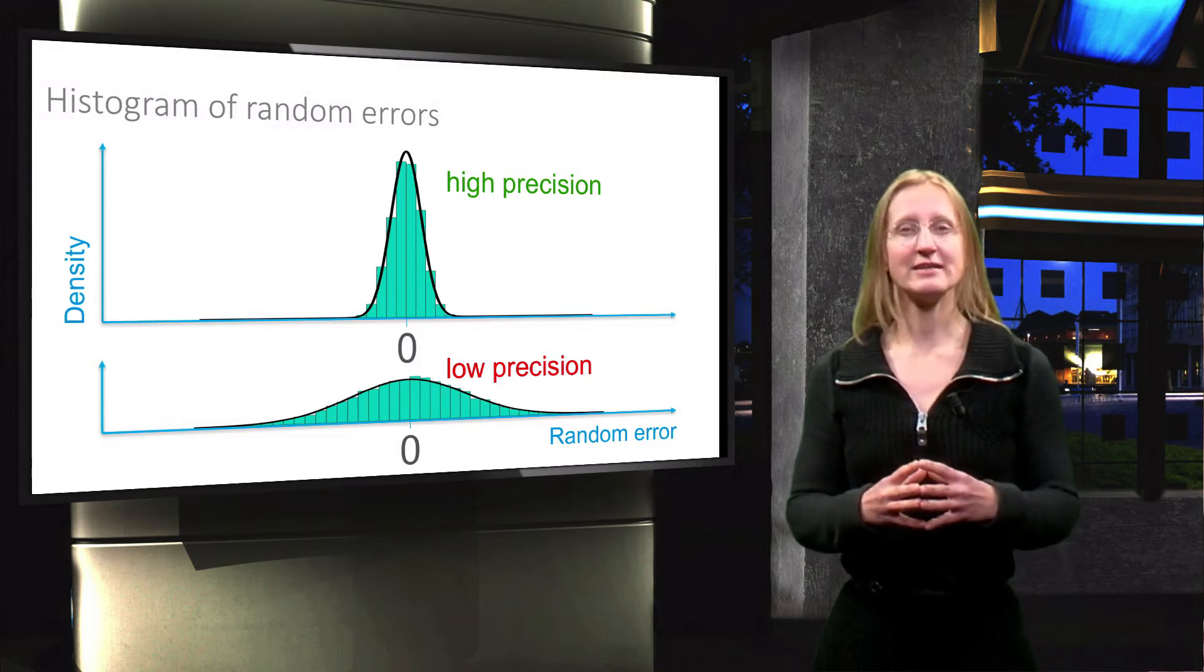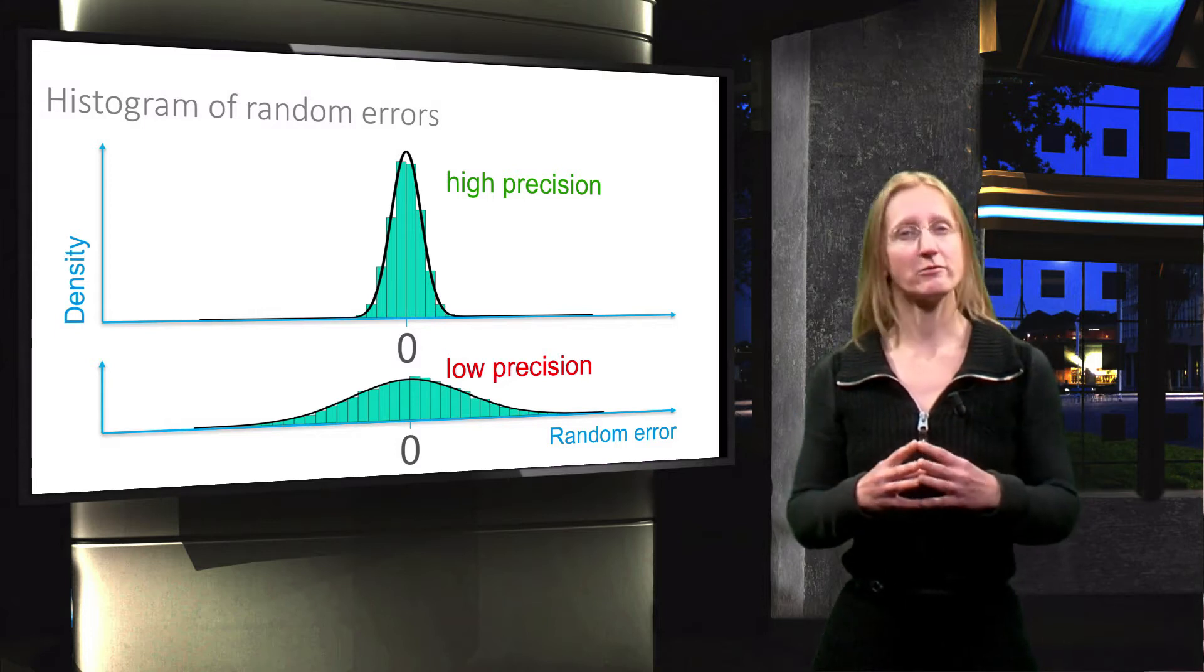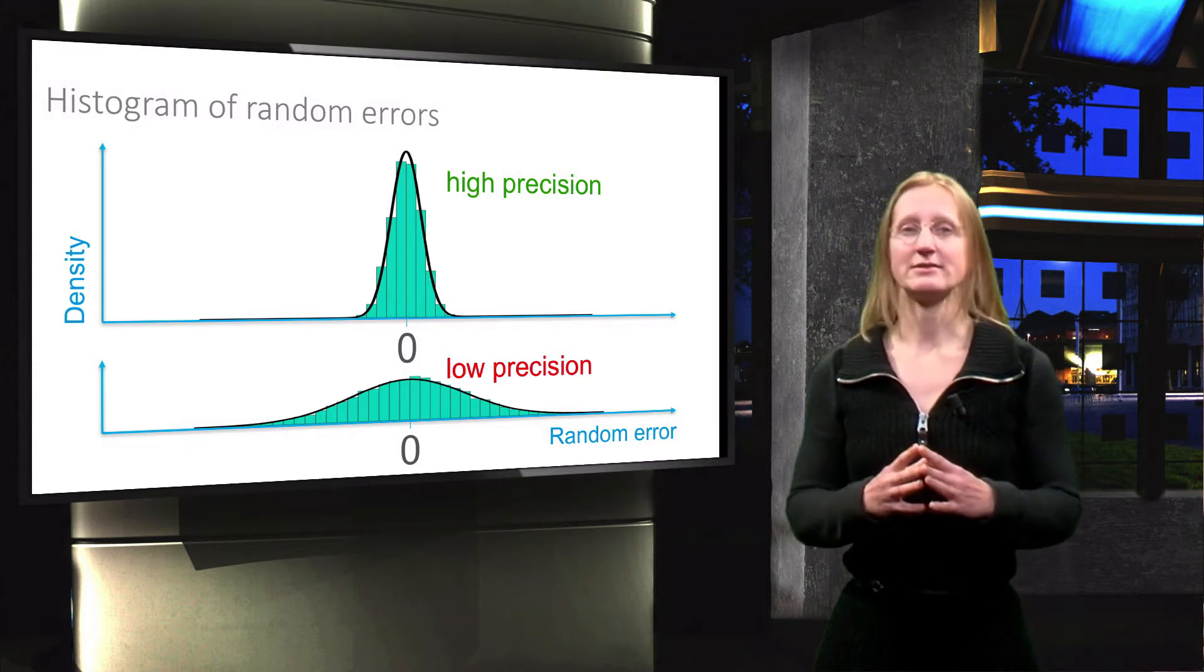Here we see the corresponding histograms. Recall the important property that on average the random errors are zero, hence the mean is zero.